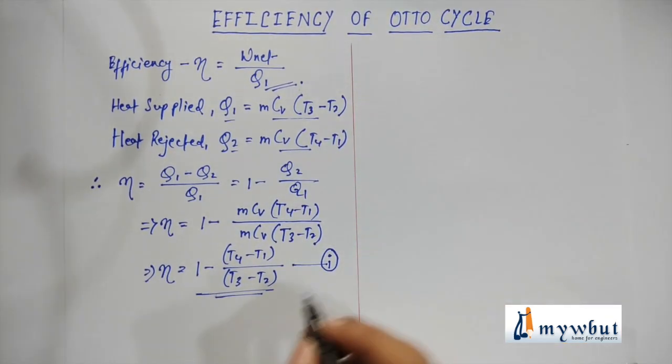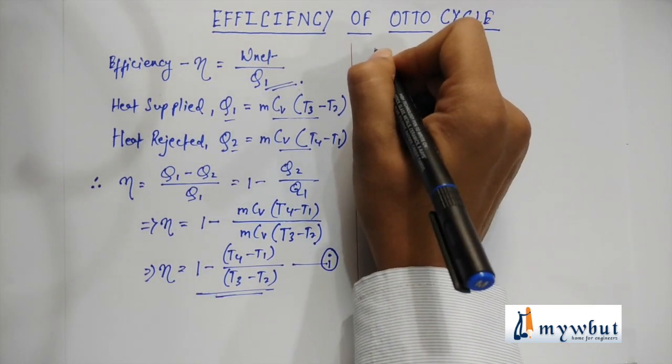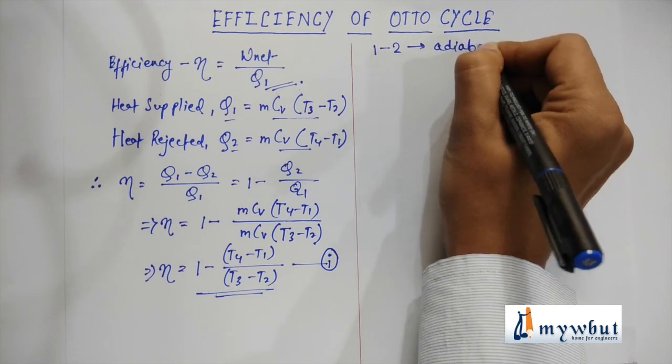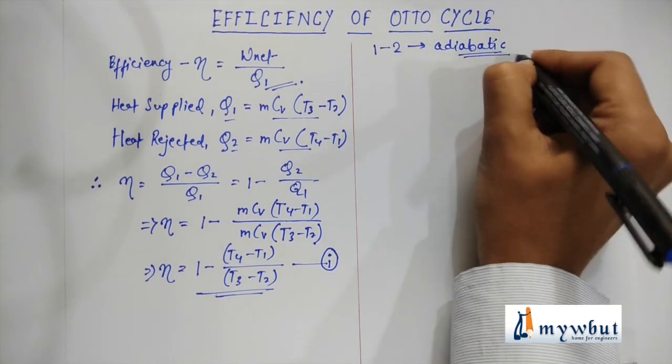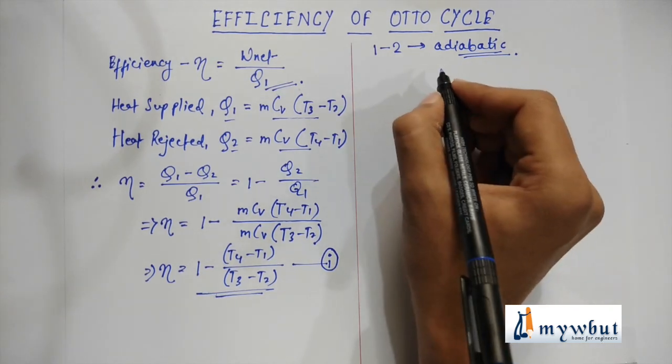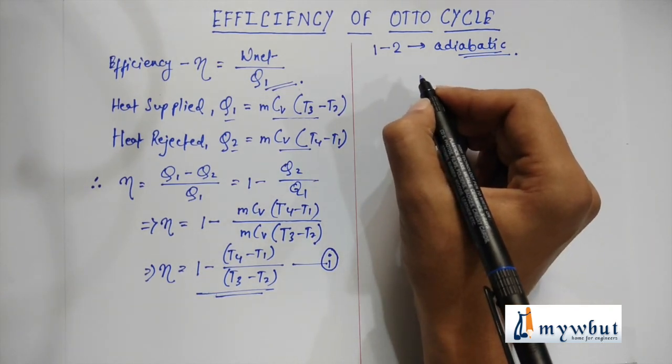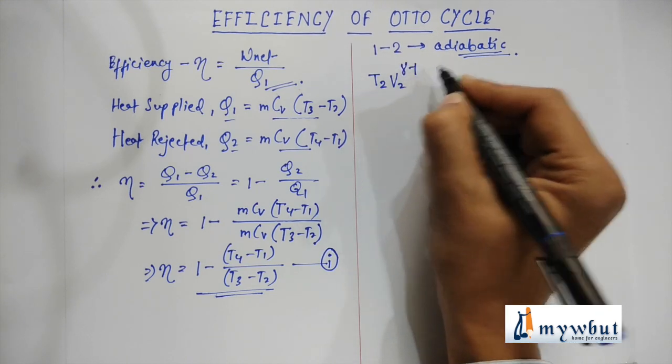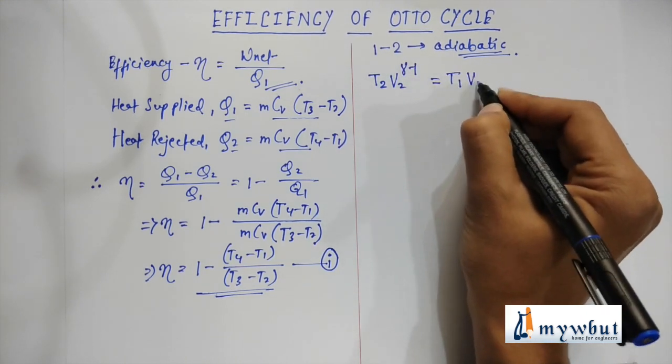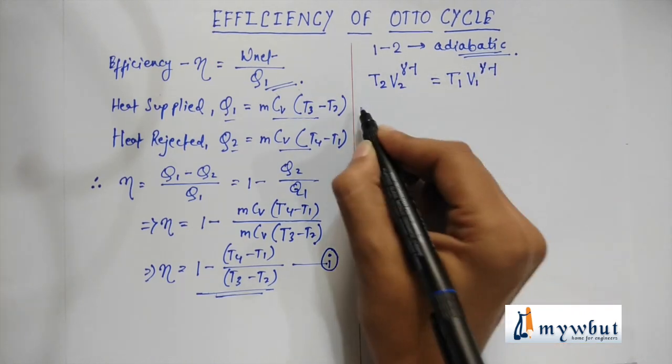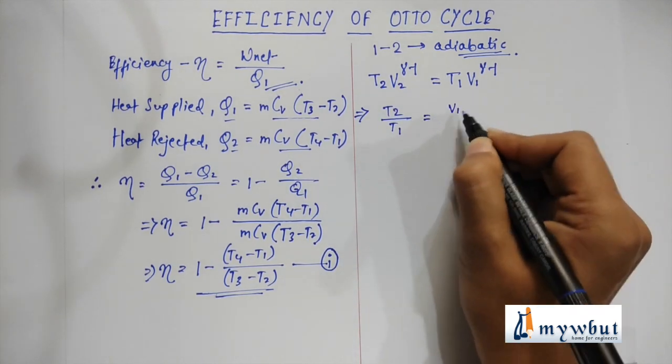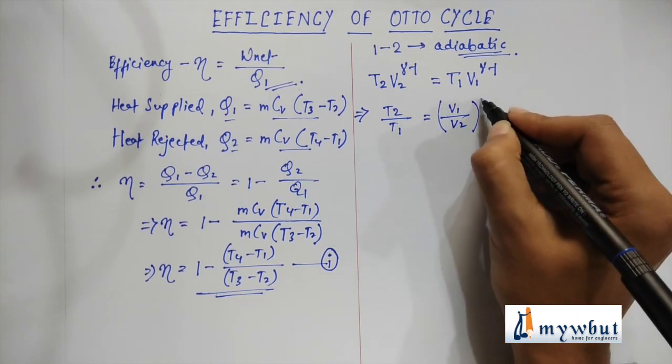Now let us proceed further taking this equation into consideration. As we have seen in the graph, the process 1 to 2 is an adiabatic process. So as we all know the equations, the relations from temperature and volume, we can write T2 into V2 to the power gamma minus 1 is equal to T1 into V1 to the power gamma minus 1, which implies that T2 by T1 is equal to V1 by V2 whole to the power gamma minus 1.